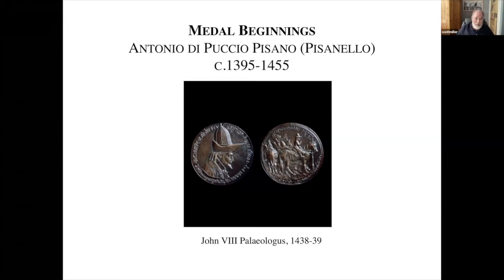It's from the visit of John VIII Palaeologus, the next to last Byzantine emperor. He had come to Italy hoping to unite the Eastern and Western churches and to gain support for his tottering throne. Here we can see a portrait on one side, and on the reverse he is looking at a cross, probably taken from a hunt scene. This was the first such medal, followed by many others.